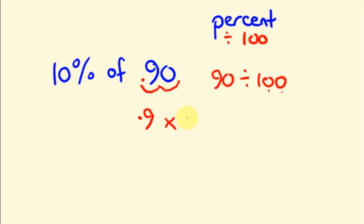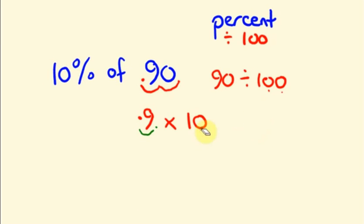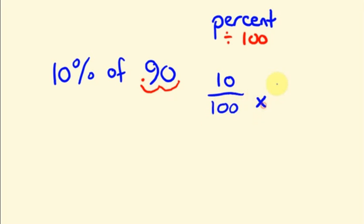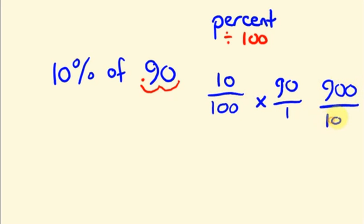Into my question, ten. So my answer is nine. Zero point nine into ten — one digit is going to move to the right, and my answer is nine. In the regular way: ten divided by hundred into ninety is nine hundred divided by hundred. All the zeros get cancelled and remaining we have only nine.